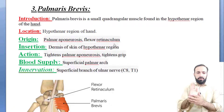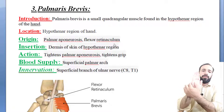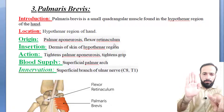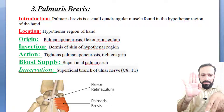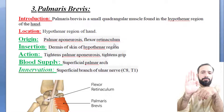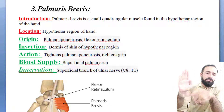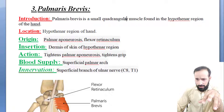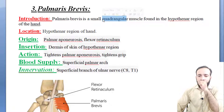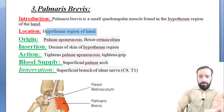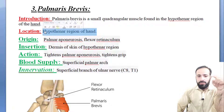Welcome back. We are discussing the muscles of the hand, specifically the muscles of the hypothenar region. We have already discussed two muscles — abductor digiti minimi and flexor digiti minimi brevis. The next muscle is palmaris brevis. Palmaris brevis is a small quadrangular muscle found in the hypothenar region of the hand.